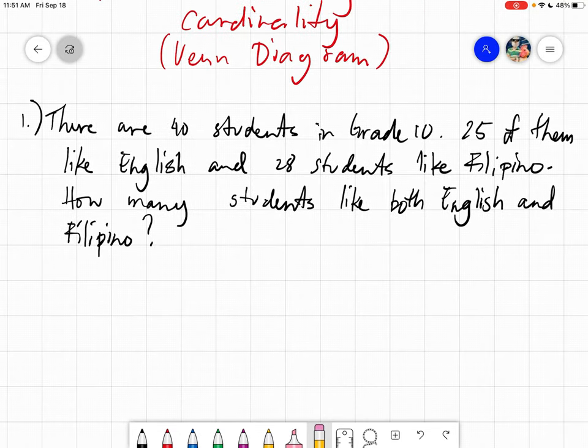So for example, let's have this problem. There are 40 students in grade 10. 25 of them like English, 28 students like Filipino. How many students like both English and Filipino?